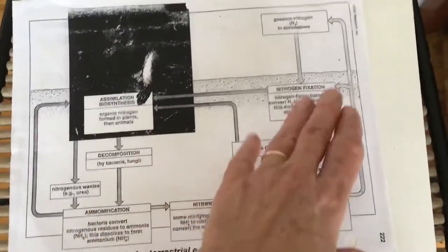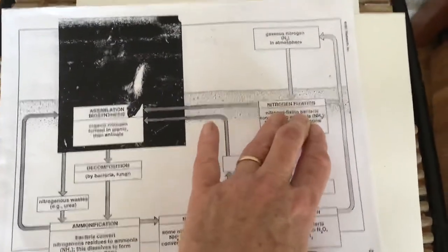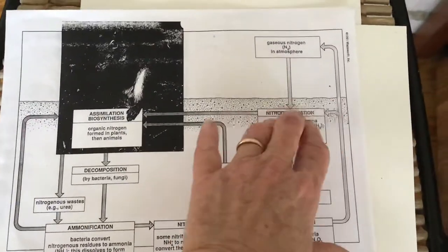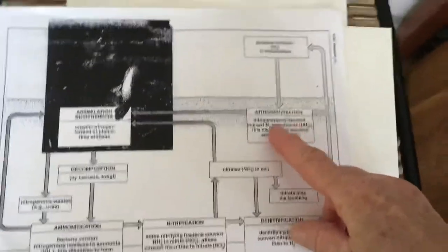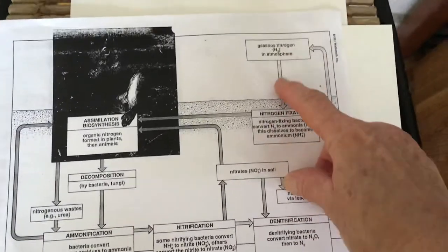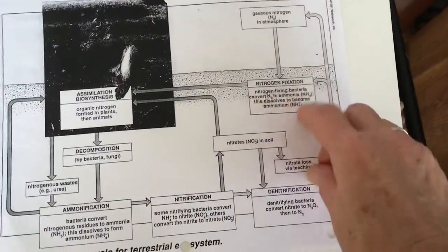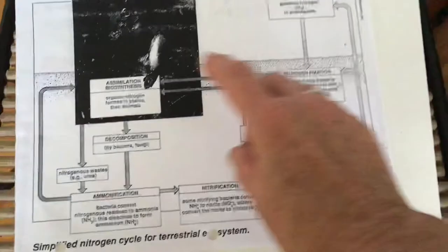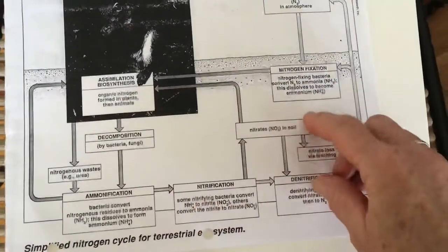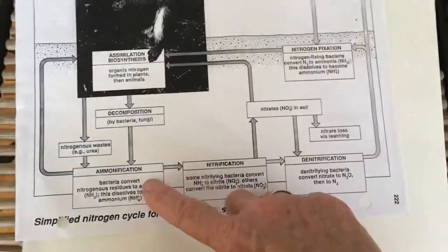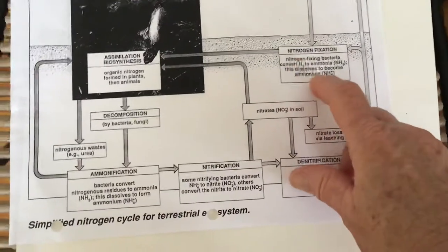There's some other parts to the cycle that can also be important. There is one part called nitrogen fixation. This is where some plants and/or some bacteria can actually take nitrogen gas from the air and turn it into nitrogen compounds that can be taken up by the food web.